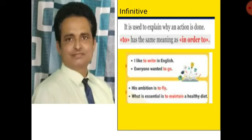Now infinitive. Infinitive is used to tell why an action is done. For example: I like to write in English — 'to write' is infinitive here. Everyone wanted to go — 'to go' is infinitive here. His ambition is to fly — 'to fly' is infinitive here. What is essential is to maintain a healthy diet — 'to maintain' is infinitive here.